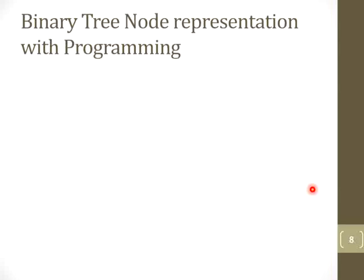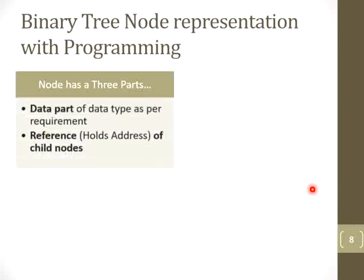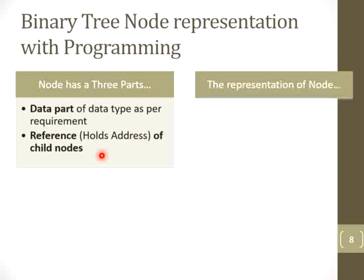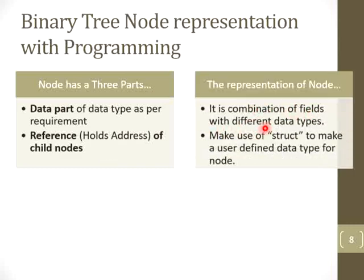Let's see what the binary tree node representation looks like with the help of programming. Whenever I want to represent a binary tree node in a program, the node has three parts. The first one is the data part, and its data type depends on our requirement — if you want to store integer data, the data part will be of type integer; if you want to store character data, it will be of type character. The next two parts are references that hold the address of the left child and the right child.